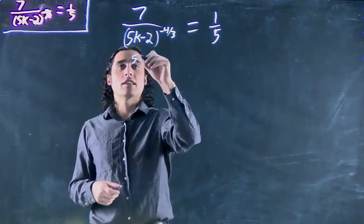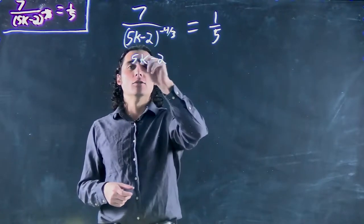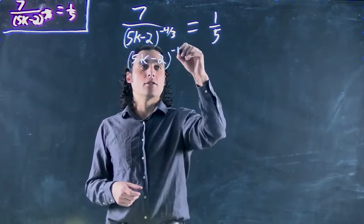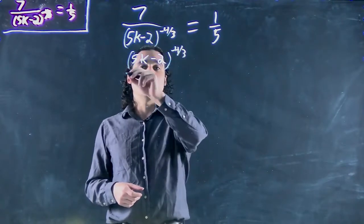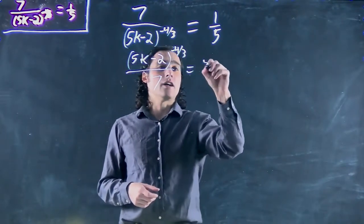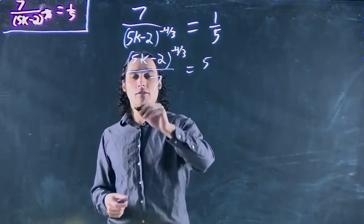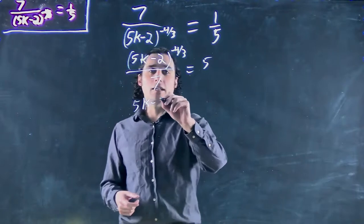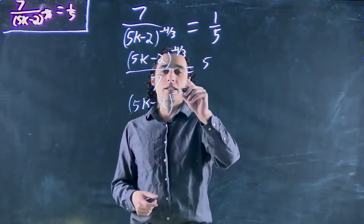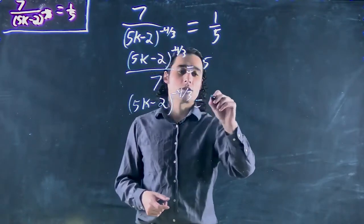We can rewrite this as 5k minus 2 to the minus 4 over 3 all over 7 equals 5. Or multiply both sides by 7, we get 5k minus 2 to the minus 4 over 3 equals 35.